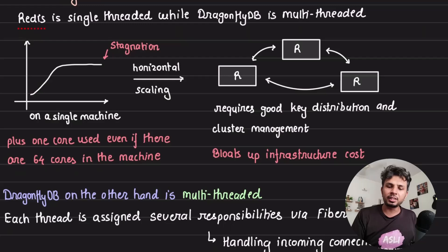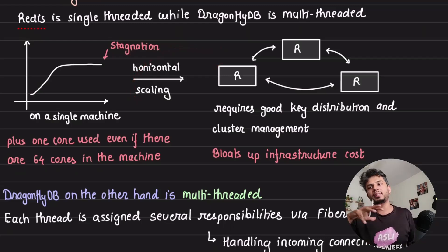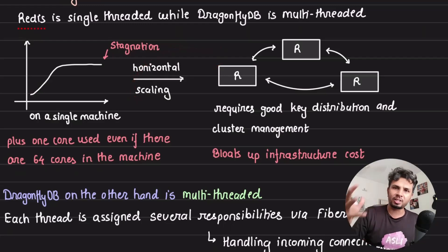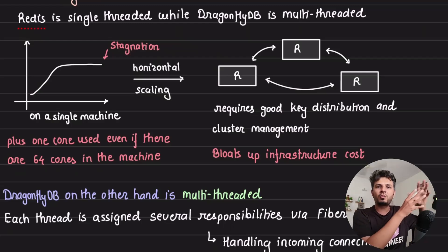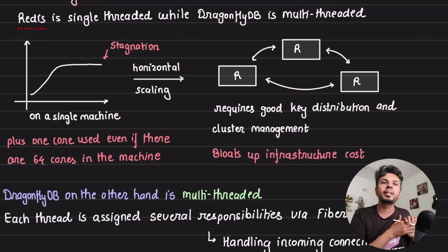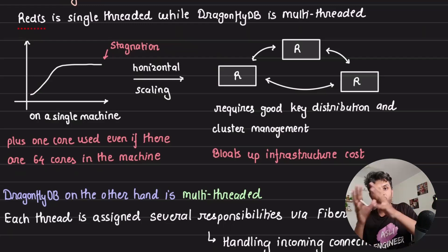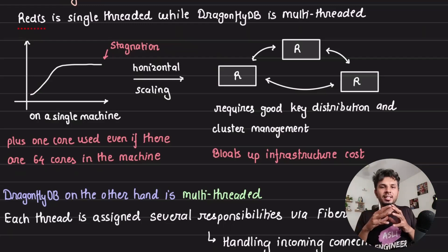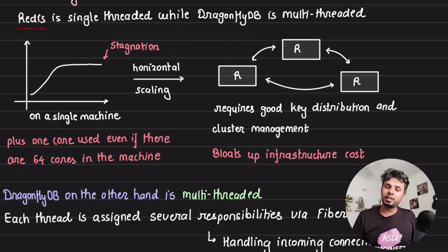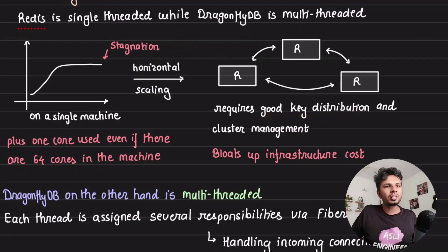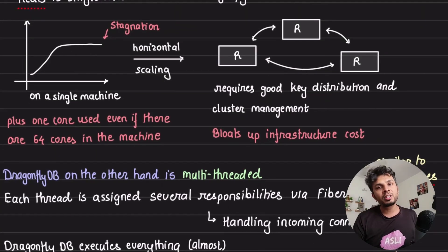This is where you would need to scale horizontally, making it a cluster to maintain the required throughput. As soon as you horizontally scale Redis, you have a cluster of nodes, which means you need to ensure good key distribution and manage the cluster — which eventually bloats up your infrastructure cost.